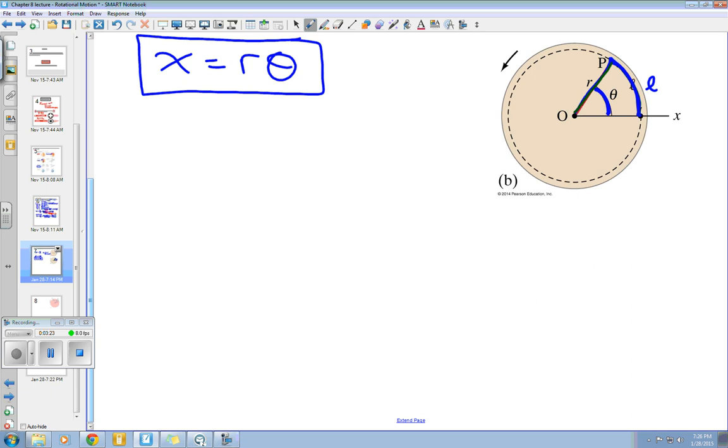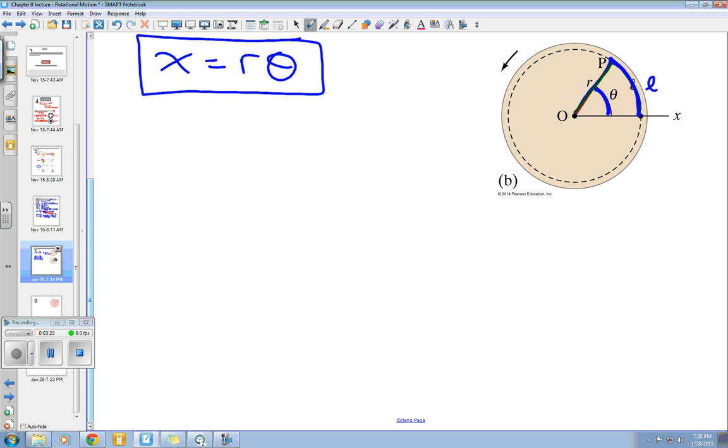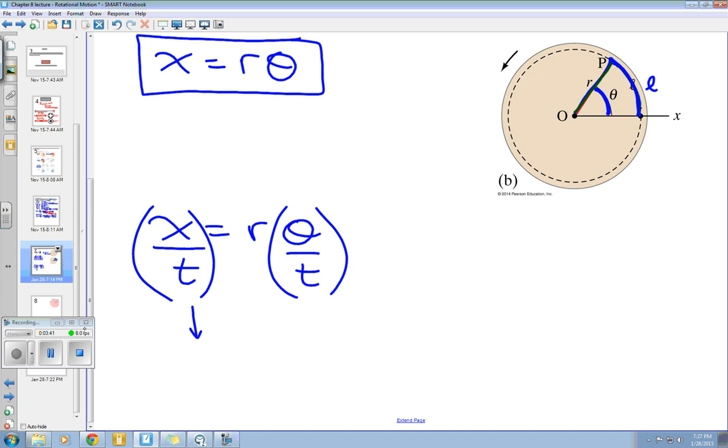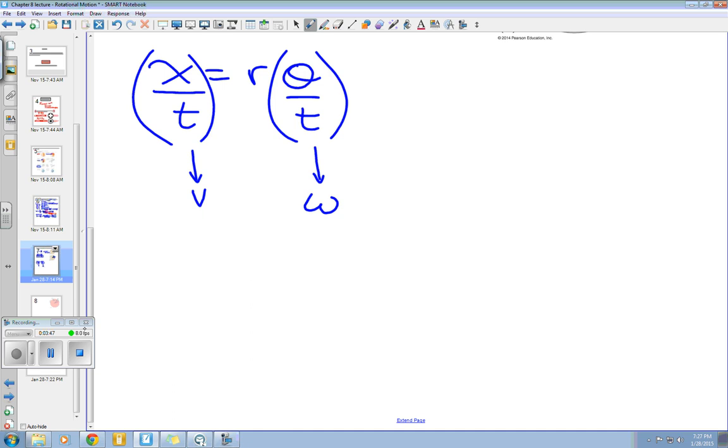Now, we know that if I divide both sides by T, so I have X equals R theta, and I divide both sides by T, I know that displacement over time is equal to velocity, and theta over time is equal to angular velocity. So this equation becomes V equals R omega.